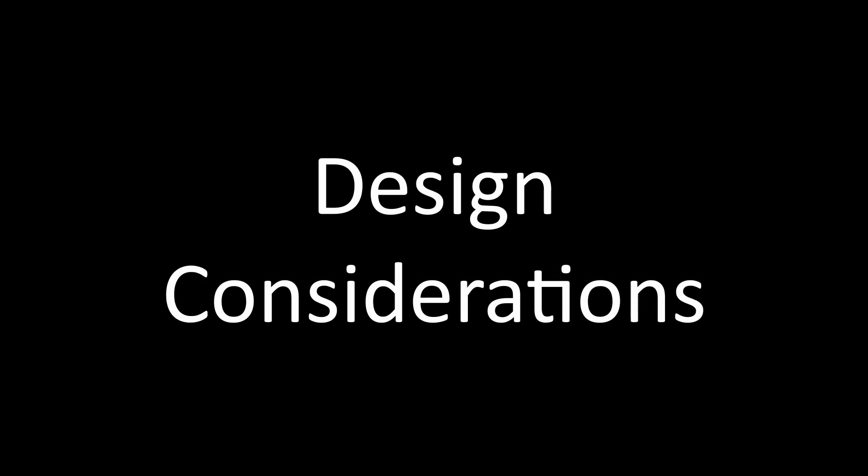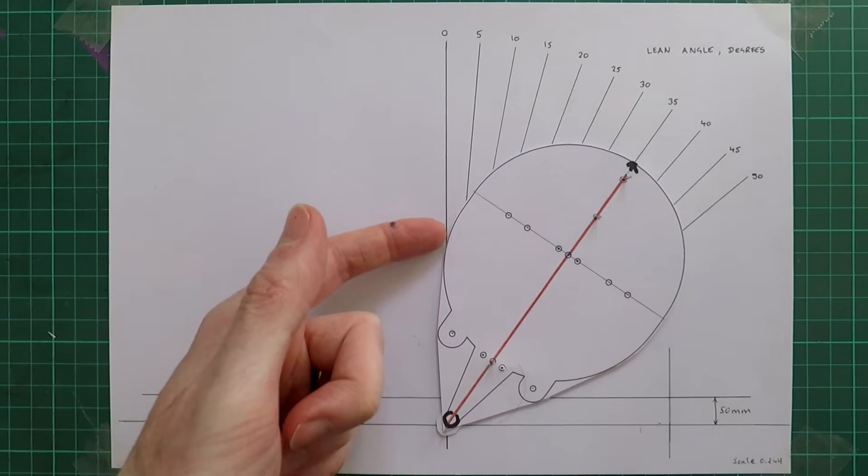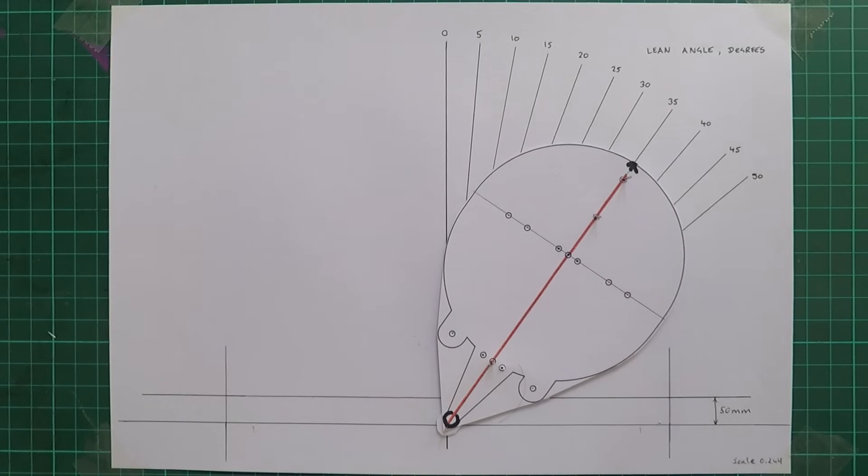So, let's look at design considerations for a tilting velomobile. First, I want my velomobile to tilt like a normal bike as if it were a two-wheeler.